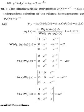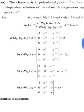W(ψ₁, ψ₂, ψ₃)(x) is the Wronskian determinant with rows: [ψ₁(x), ψ₂(x), ψ₃(x)], [ψ₁'(x), ψ₂'(x), ψ₃'(x)], [ψ₁''(x), ψ₂''(x), ψ₃''(x)].